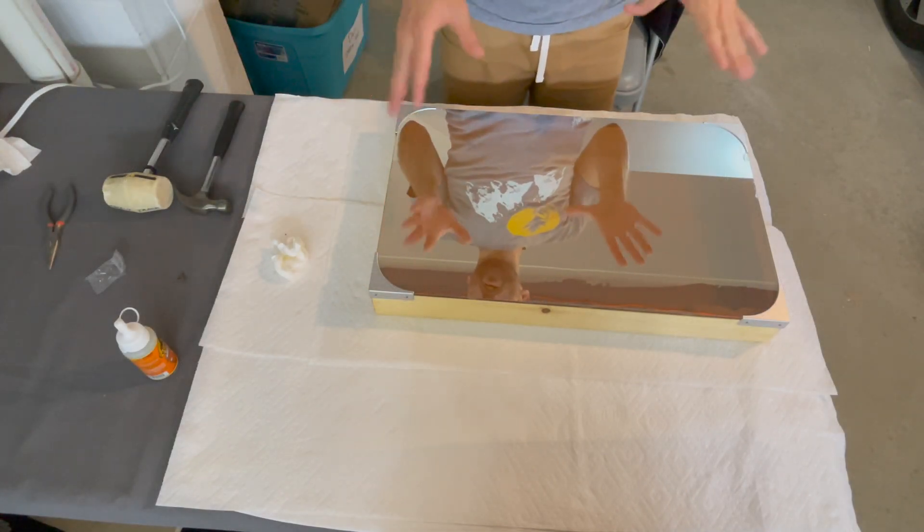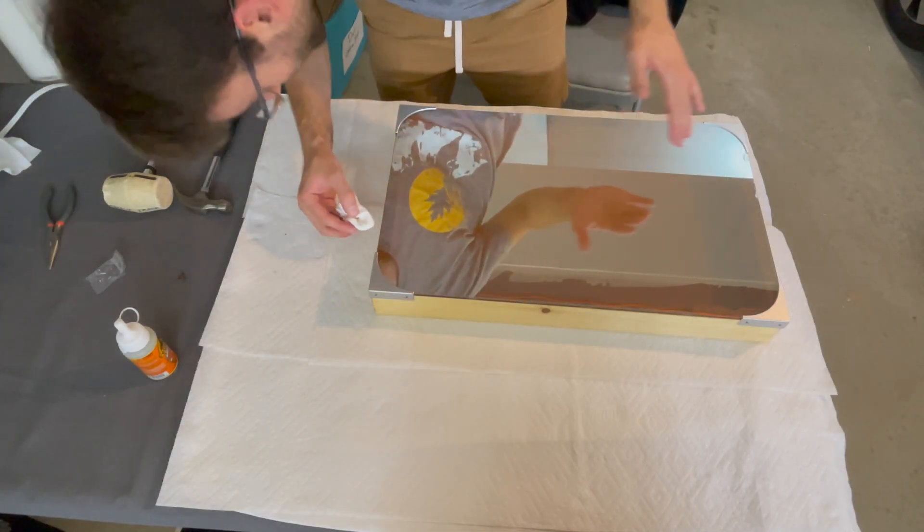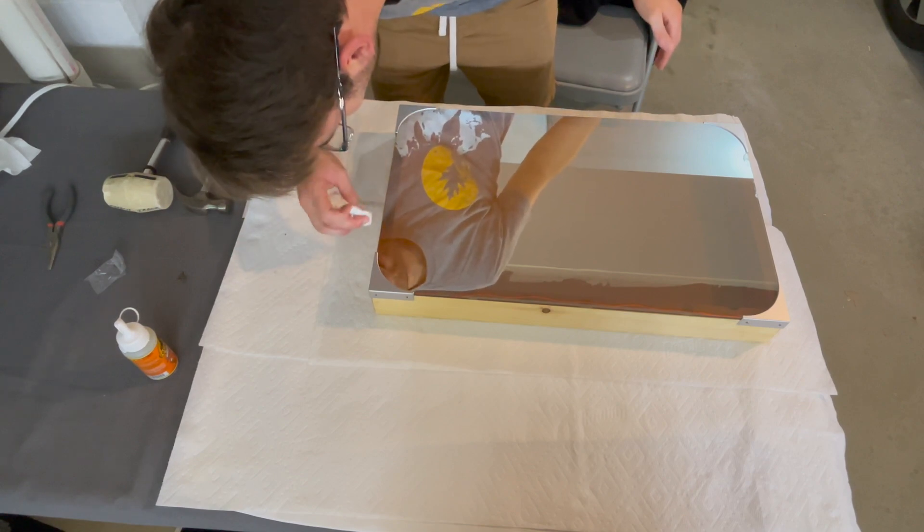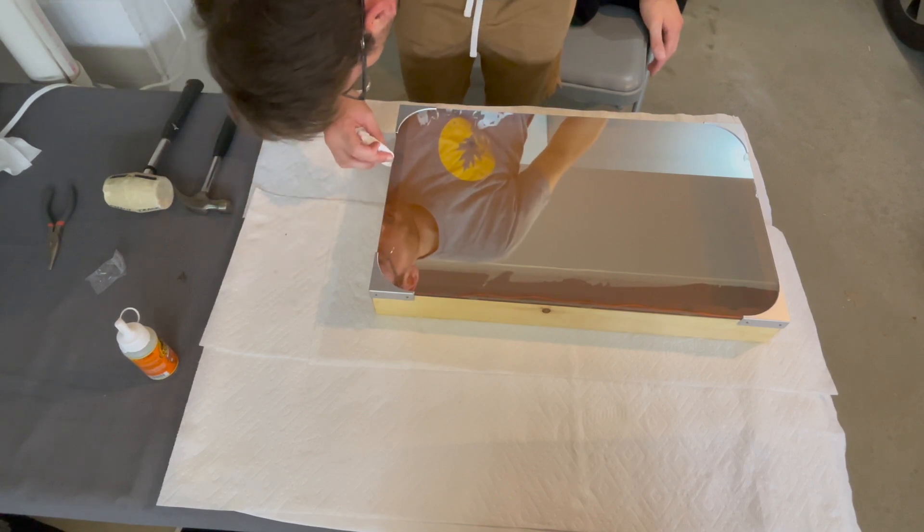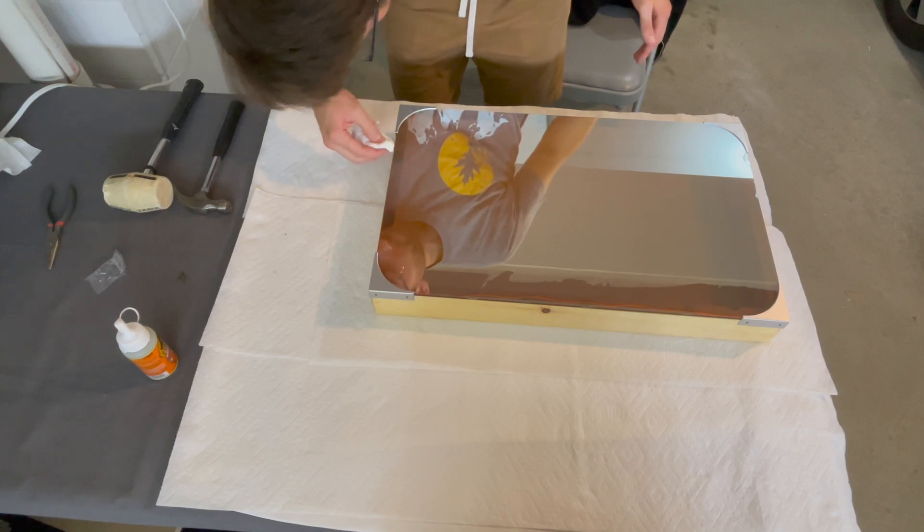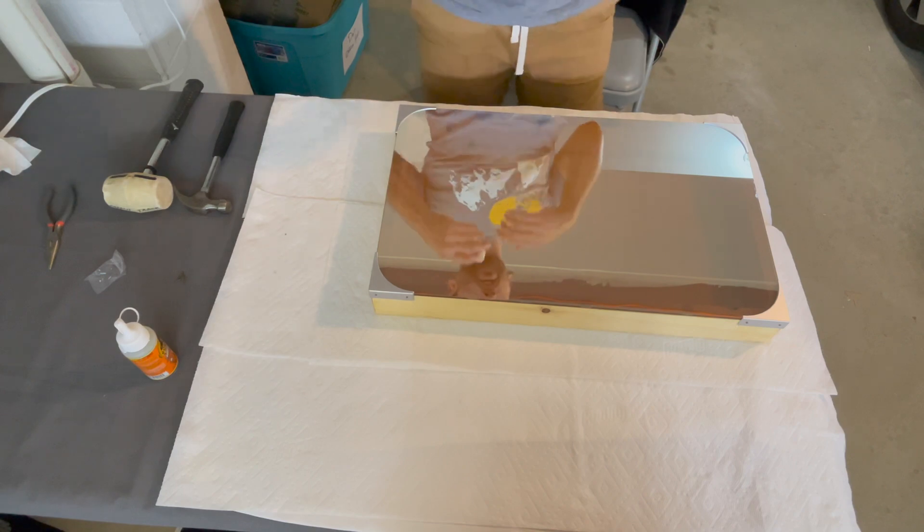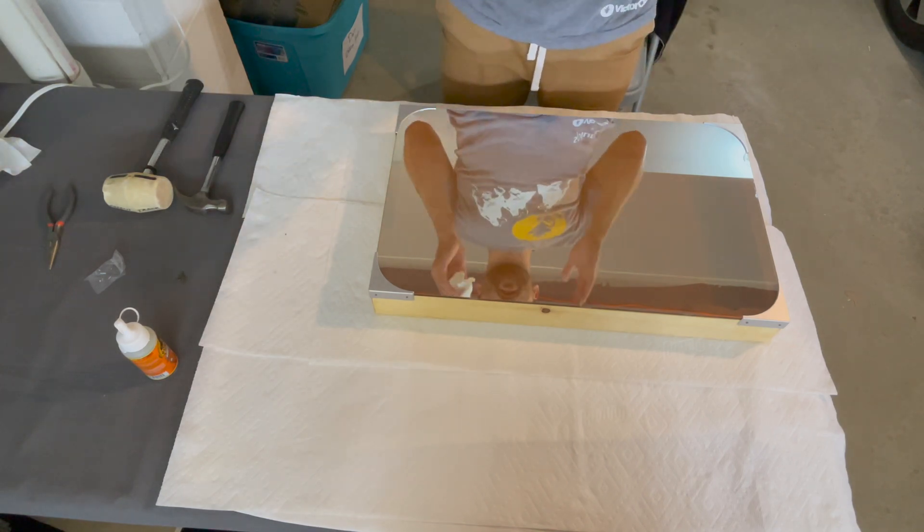And now that all of the nails are in, we are again going to check for any glue coming out of the edges where we had applied it. And once we've wiped all that away, we are going to give this 24 hours to fully dry.